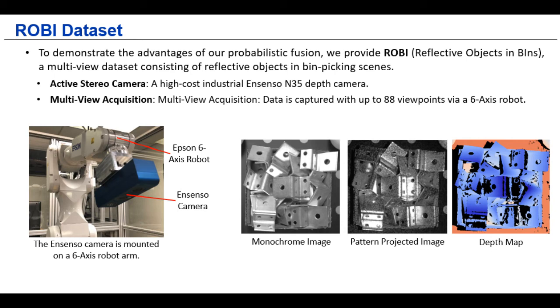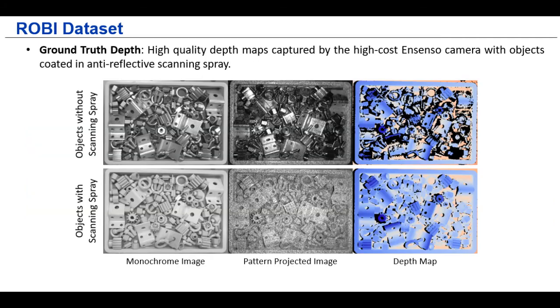And in total, we captured up to 88 viewpoints for each individual scene. And for the ROBI dataset, the most interesting part is that we provide the ground truth depth maps using the high-end Ensenso camera and the anti-reflective scanning spray. The scanning spray can create the ideal Lambertian surfaces for the objects so that the camera can achieve its optimal depth accuracy. With such high-quality depth maps, we are able to create a ground truth scene model for evaluating different algorithms for both depth fusion and object pose estimation.